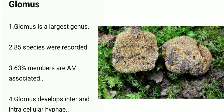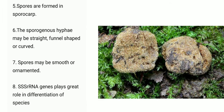On the screen you can see the image of Glomus. Point five: spores are formed in sporocarp. Sporocarp is the fruiting body. Point six: the sporogenous hyphae may be straight, funnel-shaped, or curved.